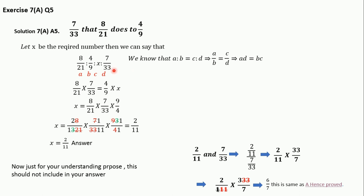The key trick here is understanding the concept: a is to b equals c is to d, which becomes ad = bc. If you have four values and one is missing, you can apply this. Hope you liked this video — please like, subscribe, and comment. Thanks for watching, bye bye and take care.